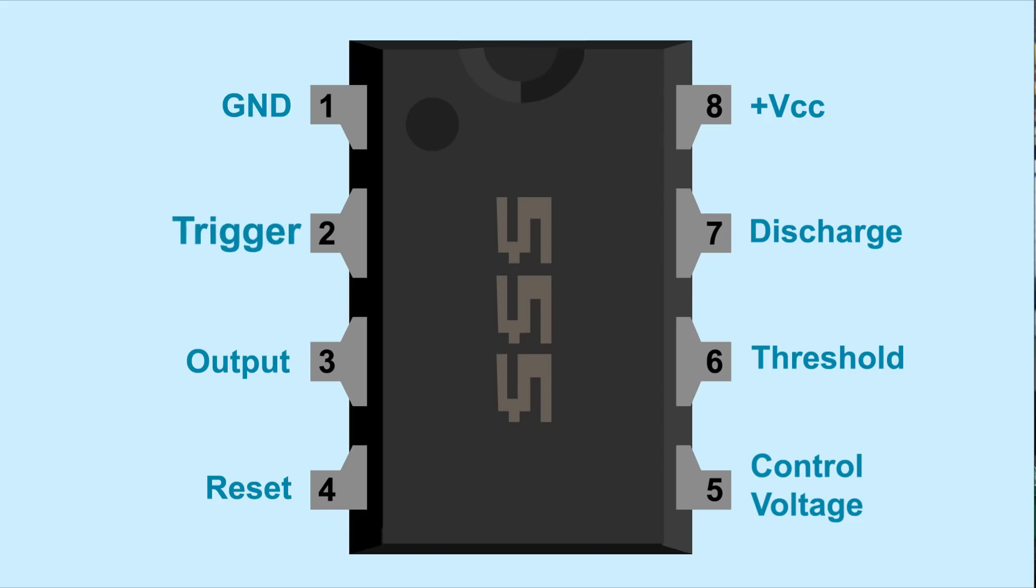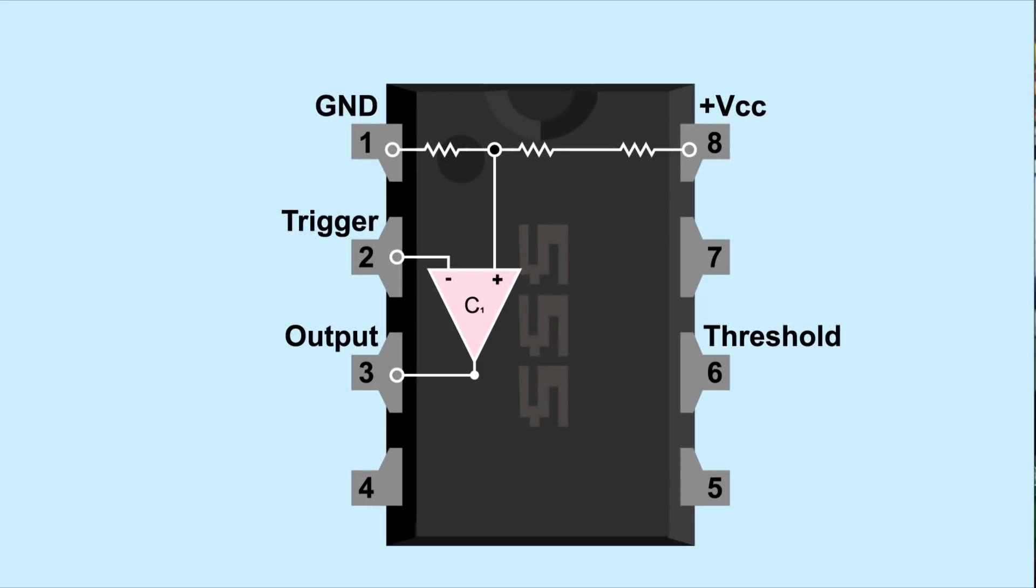In bistable mode, there are two stable states, so let's talk about how we set up the 555 for the other stable state, outputting low. We used pin 2 to trigger the 555 output high. We can use pin 6, threshold, to make the 555 output low. Threshold is connected to a second comparator. We'll call it comparator 2. However, while trigger is connected to the negative input, threshold is connected to the positive input.